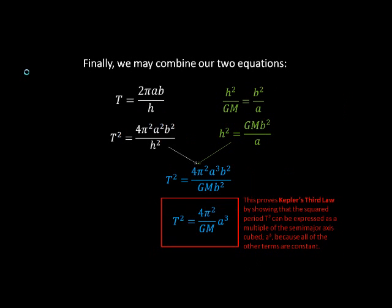I guess we're there already. So we just showed that T squared, or the square of the period, is proportional to the cube of the semi-major axis because all of the other terms are constant.